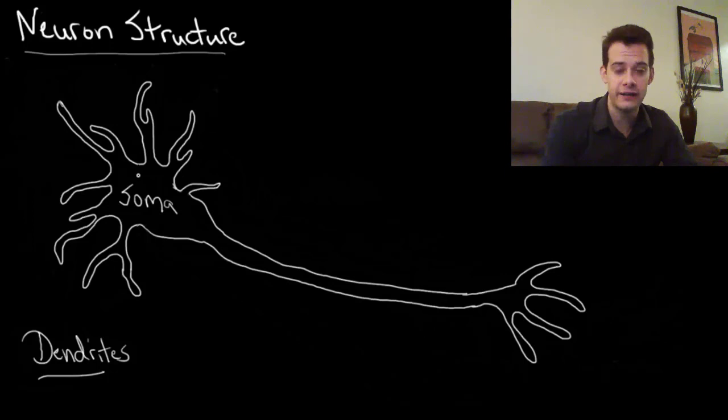And this is all added up in the soma, the cell body of the neuron. And if a certain amount of stimulation is reached, a certain threshold, then the neuron will fire.